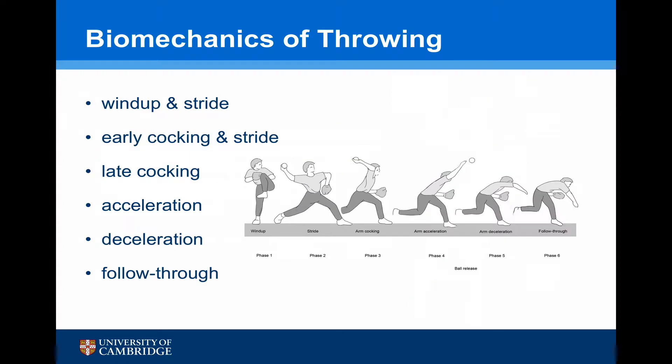With regards to the biomechanics of throwing, this is something that we've learnt the most from the Americans, where baseball is a massive sport. Throwing is divided into six segments: the wind-up and stride, the early cocking in stride, late cocking, acceleration, deceleration, and the follow-through.